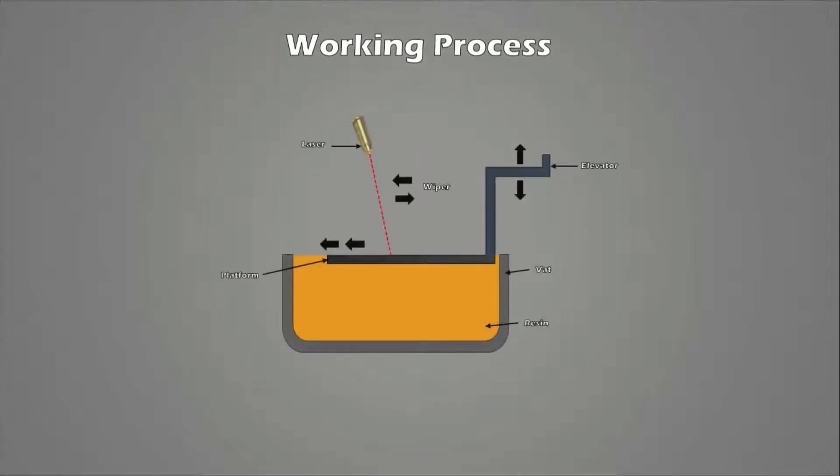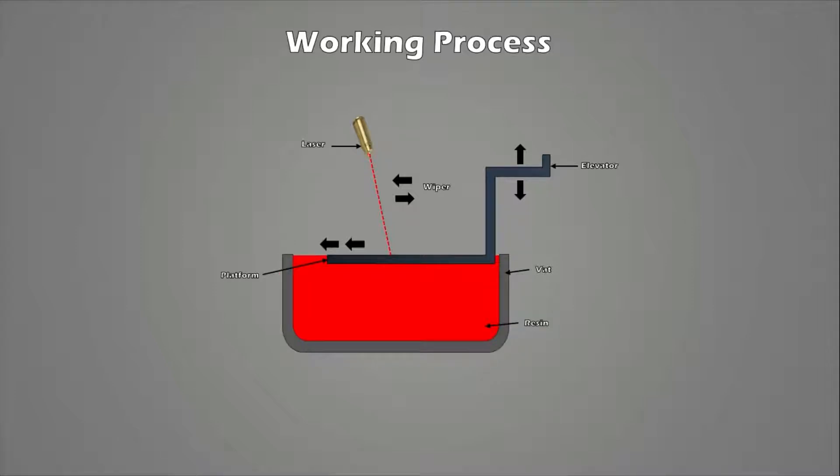Let's start with the process of SLA. The stereolithography process begins with the vat, filled with the photo-curable liquid resin, and the elevator table is set just below the surface of the liquid resin.